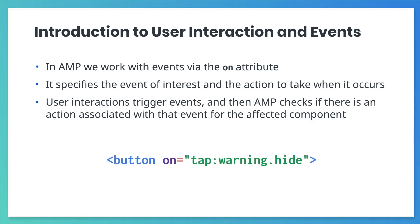For example, imagine a button that makes a message disappear from the screen. In AMP, when the user clicks the button, the tap event is fired. If that event is included in the on attribute for that button, the action occurs, which hides a warning message.